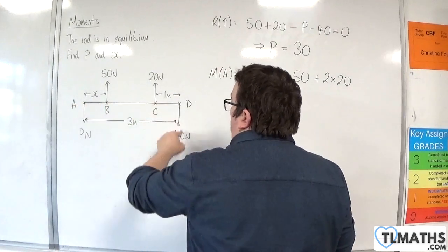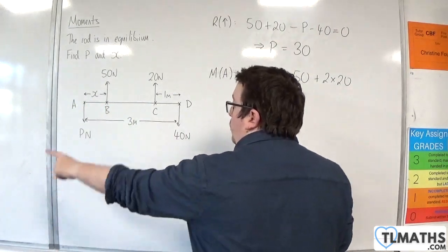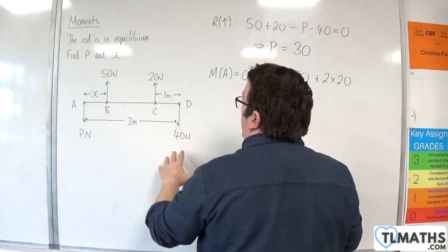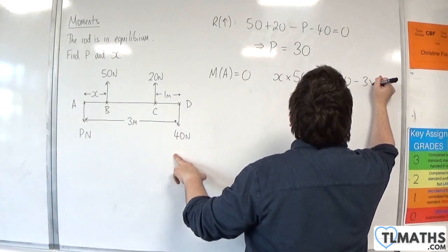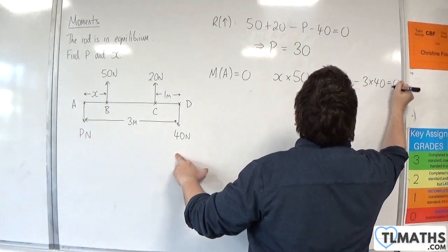Then we're 3 metres away from the 40 newton force which is going in a clockwise motion, so that's take away 3 times 40. And that's going to equal 0.